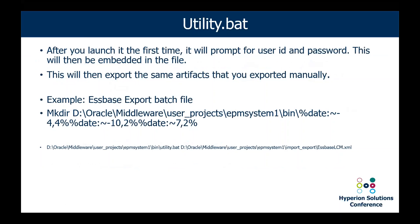After you launch utility.bat and do the export the first time, it will prompt you for your user ID and password. This user should have full admin rights to the application and the artifacts you are going to export. The password and user ID will be embedded in the file, and yes, the password does get encrypted. Now anytime you launch that batch file, it's going to export the same artifacts you had done manually. In my S-Base export batch file in Notepad, the first line has mkdir — I'm making a directory and creating a dated folder. The second line calls utility.bat and points to my XML file. So it will create a dated folder, for example October 21, 2020, and take an export based on the artifacts selected in the XML file.